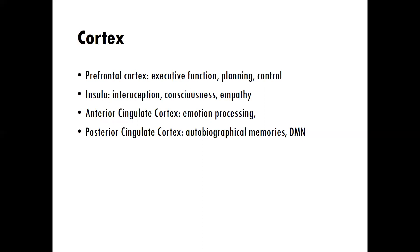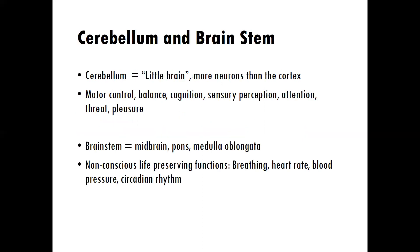We're also going to learn about the insula, which is a very important component of the cortex, the anterior cingulate cortex, and the posterior cingulate cortex. I'd mentioned the cerebellum — that cauliflower-like structure — and the brain stem. Both the cerebellum and brain stem are very important structures of the brain that you'll need to know about.